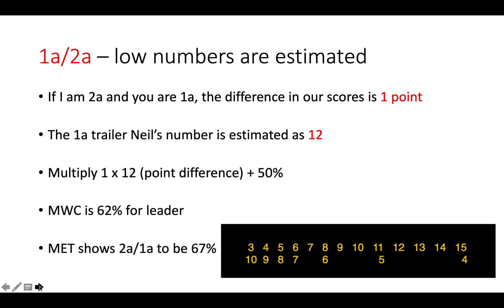The low numbers also require estimation because they are not on the rows given. So if I am two away and you are one away, the difference in our scores is one point. We can estimate towards the left that Neil's number would probably be around 12. We multiply one by 12, plus 50%, and the match winning chances would be 62%. The match equity table shows two away, one away, to be 67% — so again it's an estimation, but it's close enough.